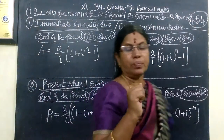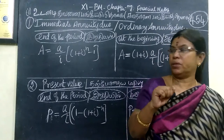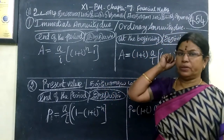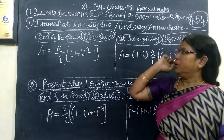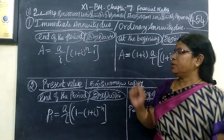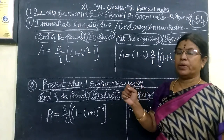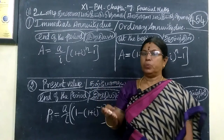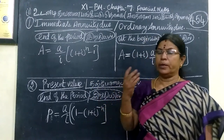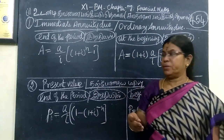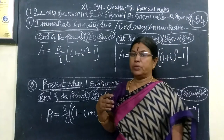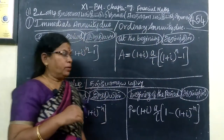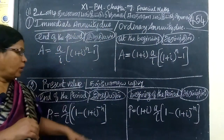Good evening students. Now we are going to look at part number 454, 11th business math. In the 7th chapter, the exercise is 7.1. We are going to look at example terms regarding exercise 7.1. There are just 4 formulas.